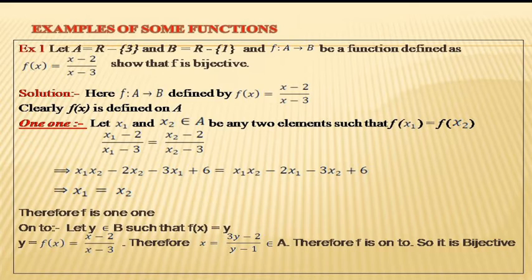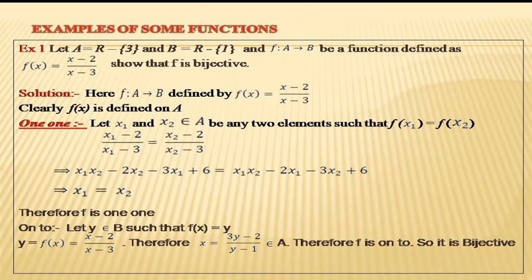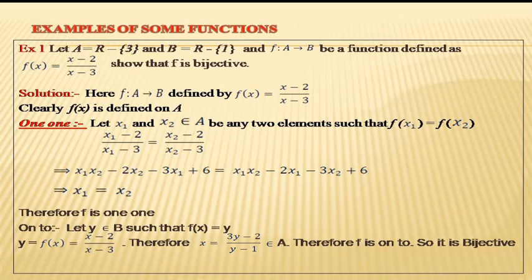We also need to confirm that x belongs to A, meaning x ≠ 3. If x = 3, then cross-multiplying gives 3y − 3 = 3y − 2, which simplifies to 3 = 2 — which is absurd. So x can never equal 3, meaning x belongs to A. Therefore, for every y in B there exists an x in A such that f(x) = y, so f is onto. Since f is both one-one and onto, f is bijective.